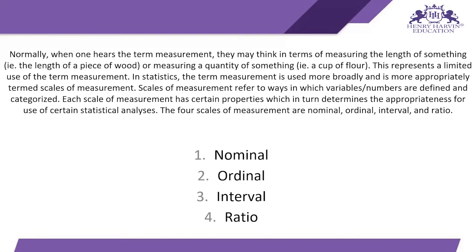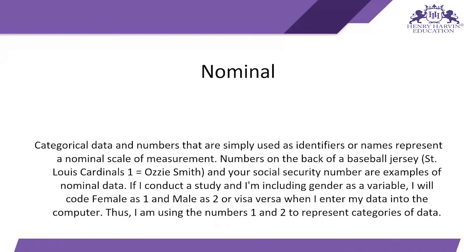We have four total scales of measurement: nominal, ordinal, interval, and ratio. First is nominal. Categorical data and numbers that are simply used as identifiers or names represent a nominal scale. When we have text data and want to avoid using that text format, we use numbers to represent those values. For example, sportsmen on a field have their name and a number on the back of their t-shirt — that number represents that sportsman, and that comes under the nominal scale of measurement.